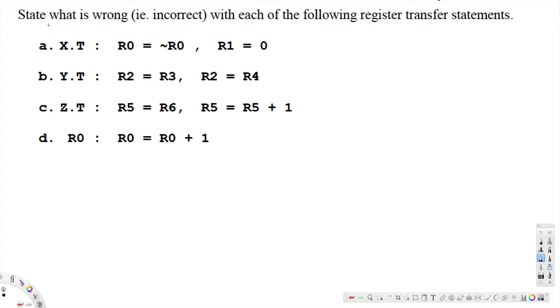Let's look at this problem right here. The question is asking state what is wrong, incorrect, with each of the following register transfer statements. The first one says X.T: